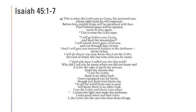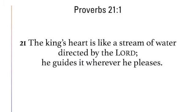God is faithful to his promise — he stirs the heart of King Cyrus to fulfill the prophecy made through Jeremiah. Scripture tells us that the king's heart is like a stream of water directed by the Lord; he turns it wherever he pleases — Proverbs 21:1. God has ultimate authority over every single ruler, no matter how powerful they think they are. That is why we should be praying for them, asking God to order their footsteps and direct their path.